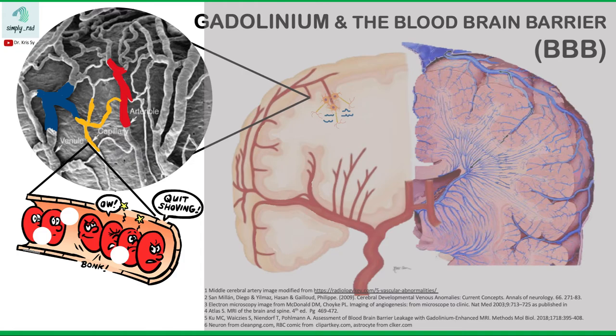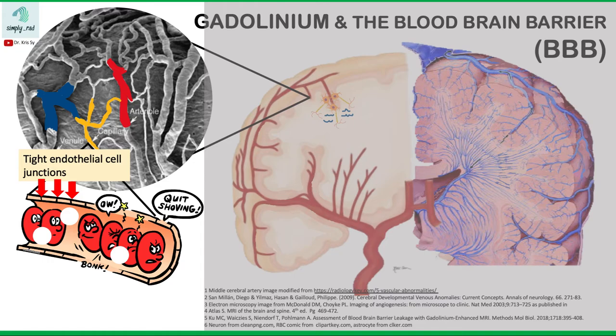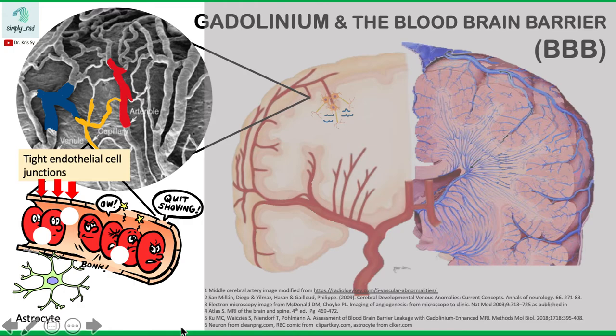Now look at these capillary walls. These capillary walls have an endothelium, and this endothelium has tight endothelial cell junctions. In addition, these walls are guarded by astrocyte foot processes. So these tight junctions of the endothelium, plus the astrocyte foot processes, can be likened to security guards of the brain — the bad things within the blood vessels are not able to simply enter the brain. This is what we call the blood-brain barrier.